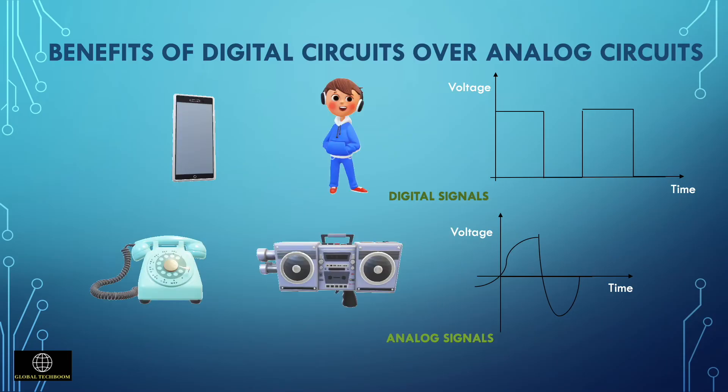Digital circuits are more reliable than analog circuits. In digital circuits, the input-output signals are in the form of digital or discrete signals, due to two distinct voltages: high voltage and low voltage. Whereas in analog circuits, signals are in the form of continuous signals. Most analog circuits are less accurate and slower in performance than digital circuits.